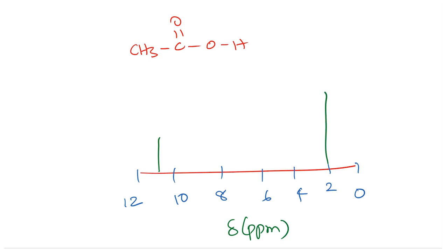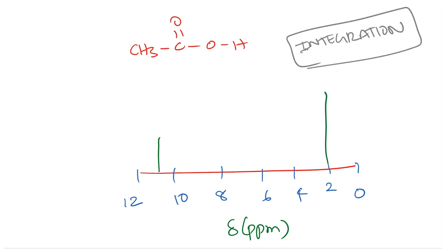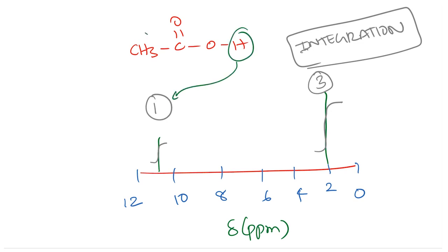When we integrate these peaks, integration is a mathematical analysis done on the peak that gives you a value. What we look at is the height of the integrated peak. When you integrate, we find that the peaks are in the ratio of 1 to 3.